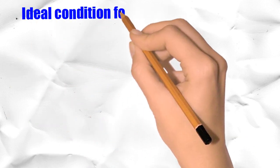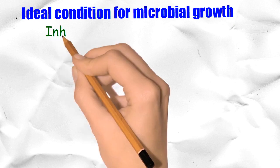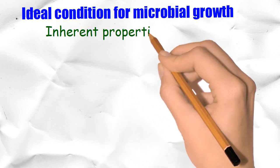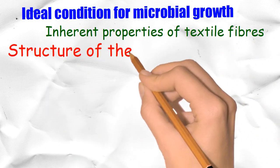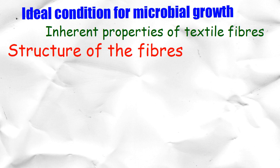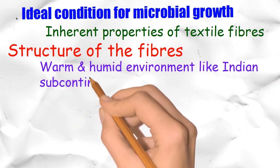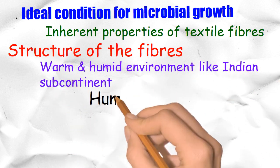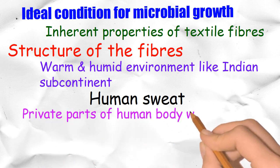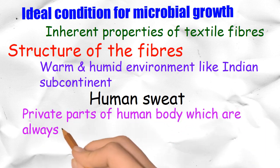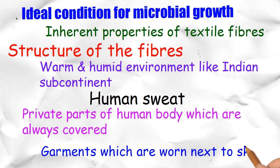Ideal conditions for microbial growth include the inherent properties of textile fibers, structure of the fibers, warm and humid environment like the Indian subcontinent, human sweat, private parts of the human body which are always covered, and garments which are worn next to skin.